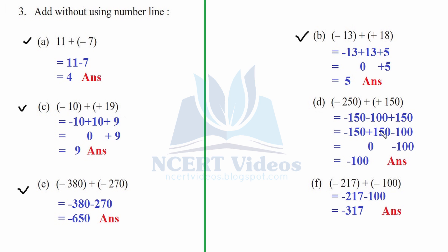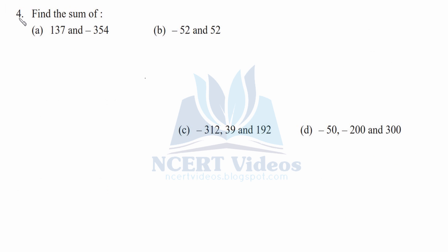Arrange minus 150 and plus 150 — these cancel out — leaving minus 100. Therefore the answer is minus 100 for part d. Part f: minus 217 plus negative 100. Signs are the same, so just add the numbers and put the sign: 217 plus 100 is 317. That was question number three.